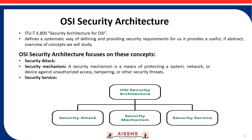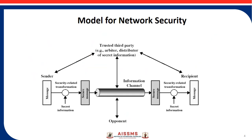The next concept is a security mechanism — it involves protecting a system, network, or device against unauthorized access, tampering, or other security threats. The third concept is security services, which refers to the different services available for maintaining the security and safety of an organization, helping to prevent any potential security risk. Security services are divided into five types: authentication, access control, data confidentiality, data integrity, and non-repudiation.